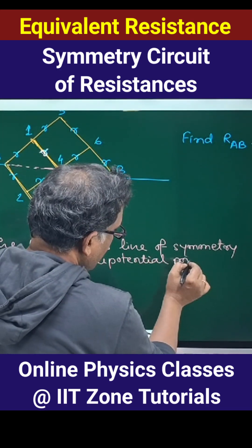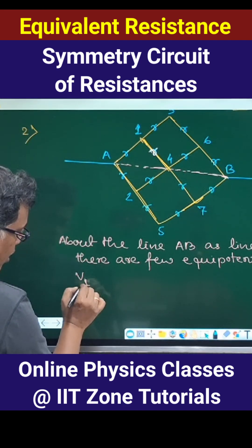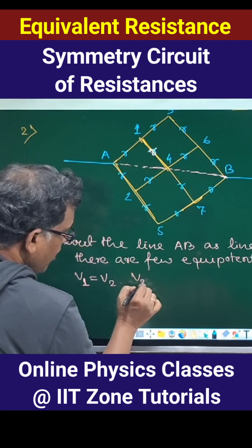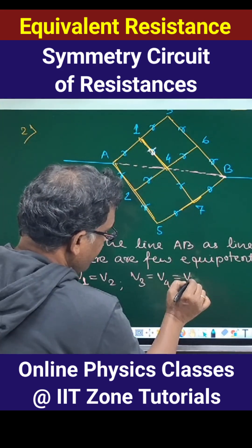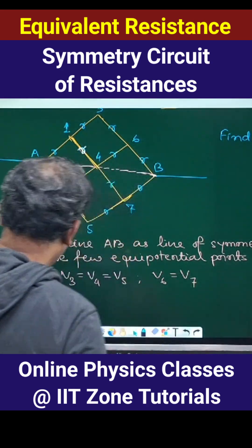Among equipotential points, can we write down potential of 1 equals to potential of 2, potential of 3 equals to 4 equals to 5, and potential of 6 equal to potential of 7? Then in this case, if we try to simplify, for example, starting from a, right, a to equipotential points 1 and 2.